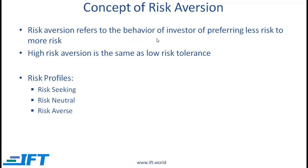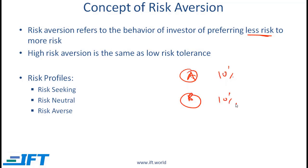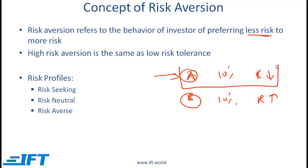Risk aversion refers to the behavior of investors of preferring less risk to more risk. For a rational investor, if two investment options A and B both offer the same return, then all else equal the investor will prefer the option that offers lower risk. If option A has relatively low risk and option B has relatively high risk, a normal risk averse investor would prefer investment A over B even though A and B have the same expected return.